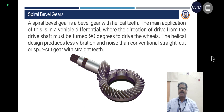Spiral bevel gears: A spiral bevel gear is a bevel gear with helical teeth. The main application is in a vehicle differential where the direction of drive from the drive shaft must be turned 90 degrees to drive the wheels. The helical design produces less vibration and noise than conventional straight-cut or spur-cut gears with straight teeth.